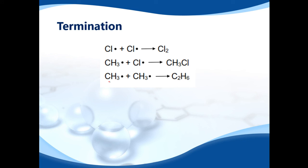Another product could be a CH3 radical, a methane radical, and another methane radical to give you C2H6, which you should know is ethane. So all these—Cl2, CH3Cl which is chloromethane, and C2H6 which is ethane—are all products, and these are called termination reactions.